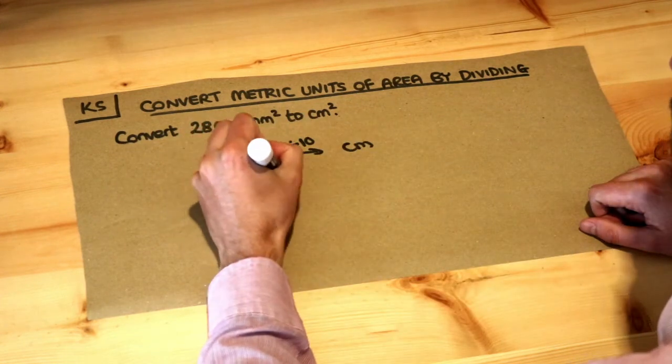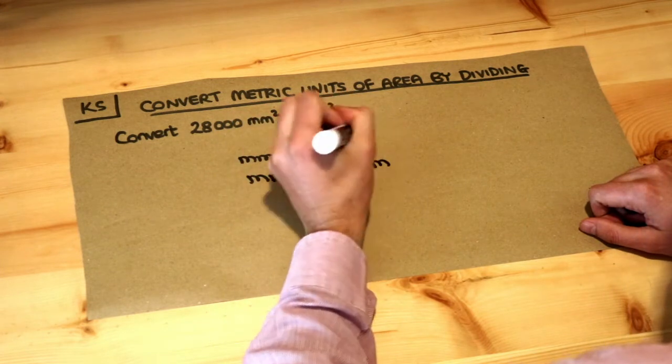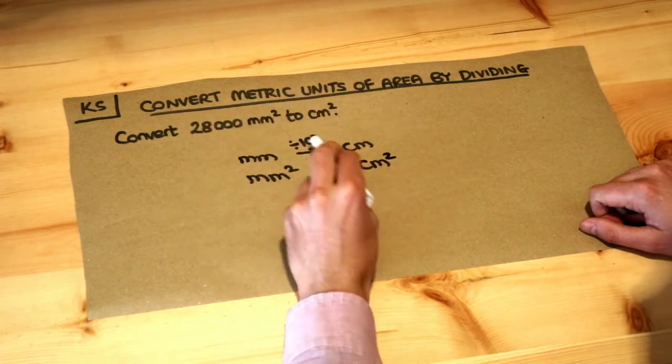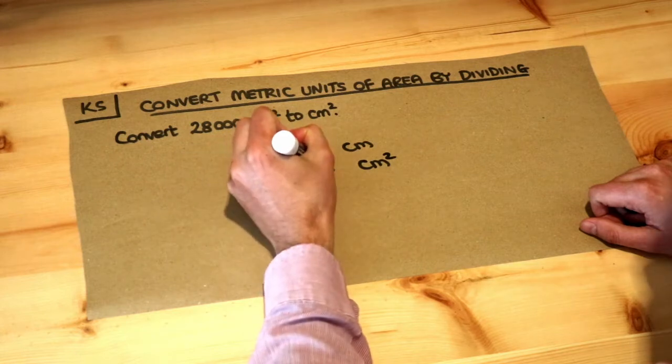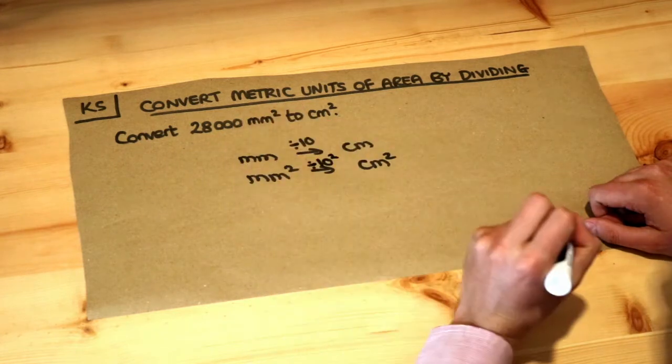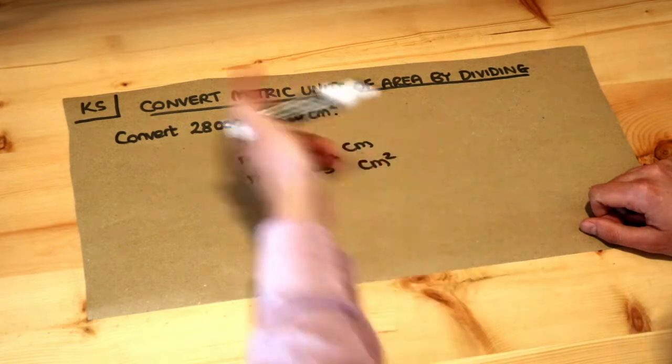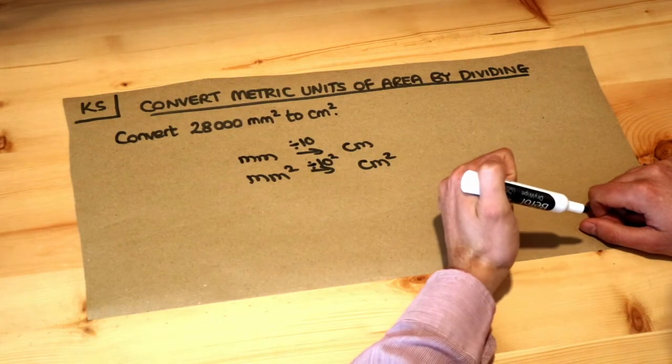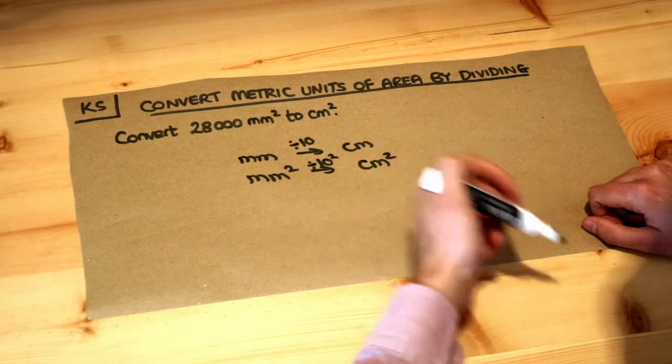Now, if we're going from millimetres squared to centimetres squared, then you don't divide by 10, you would divide by that scale factor squared. I explain why this is in the previous video on converting metric units of area by multiplying.